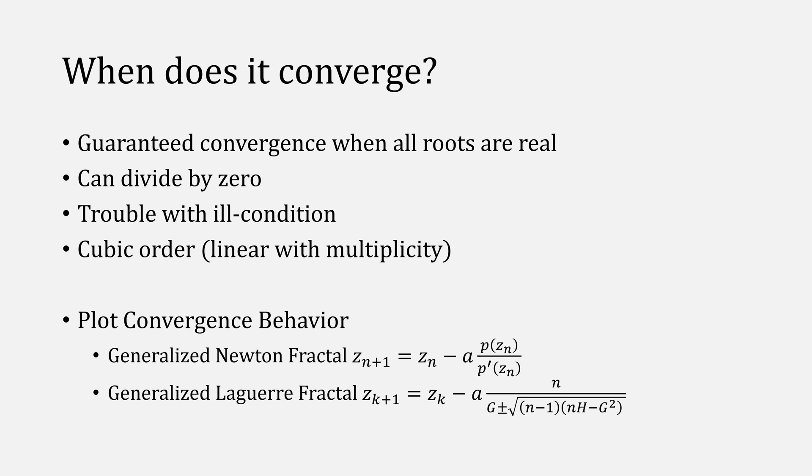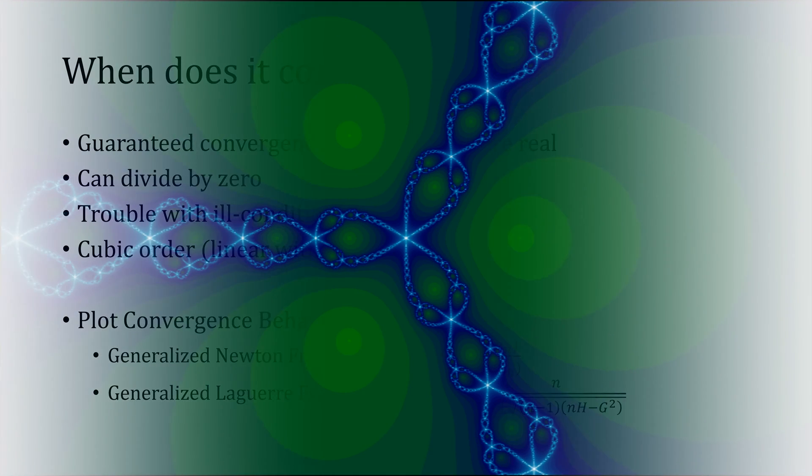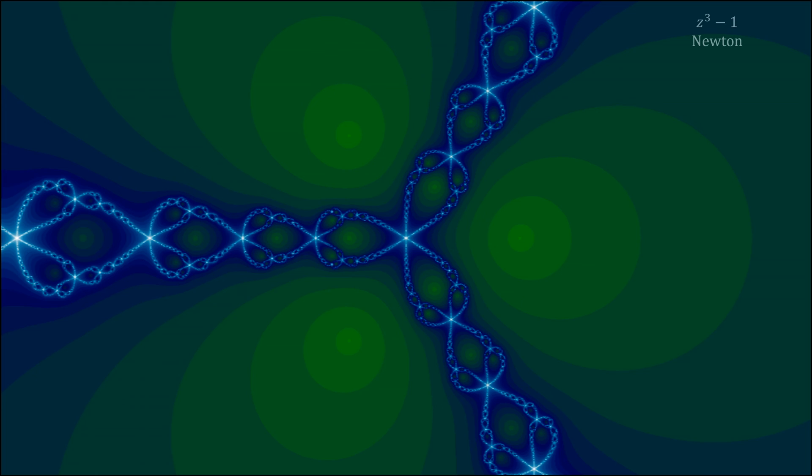Recall how we plotted the behavior of Newton's method in the complex plane using a Newton fractal? We can do the same thing with Laguerre's method. I would highly recommend watching my video on Newton fractals if you haven't already to make the following images more intelligible. Otherwise you can still enjoy them because they look pretty cool. This is our Newton fractal for z cubed minus 1, and you'll notice that there's a large amount of white, meaning it's taking a very long time to converge or it's not converging at all.